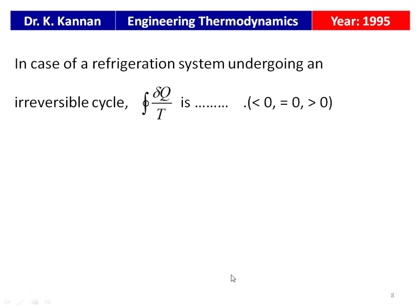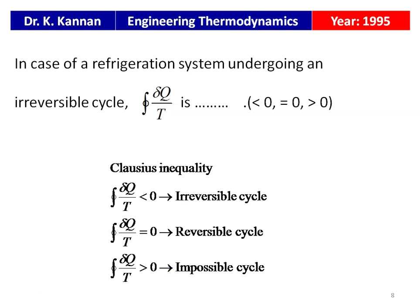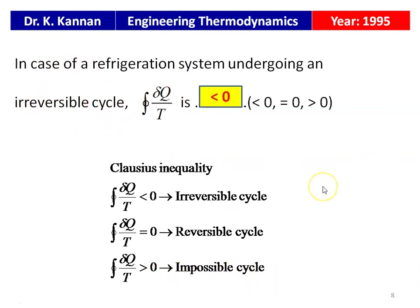Next question from the 1995 question paper: in a refrigeration system undergoing an irreversible cycle, the cyclic integral ∮δQ/T is — less than 0, equal to 0, or greater than 0? From the Clausius inequality: for an irreversible cycle, ∮δQ/T < 0; for a reversible cycle, ∮δQ/T = 0; and when ∮δQ/T > 0, the cycle is impossible. So for an irreversible cycle, ∮δQ/T < 0.